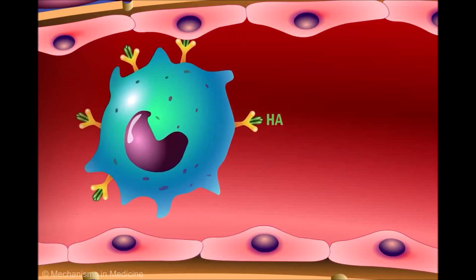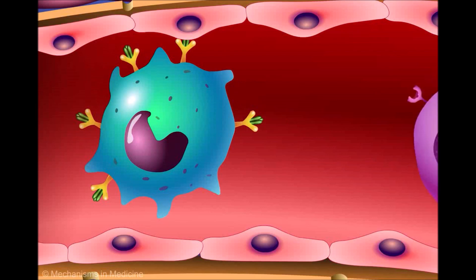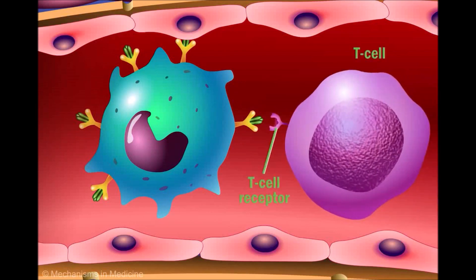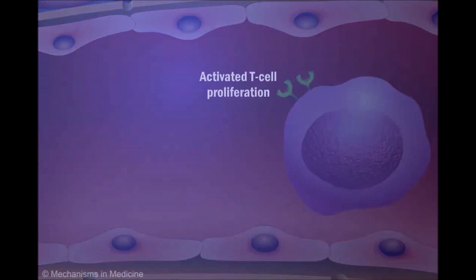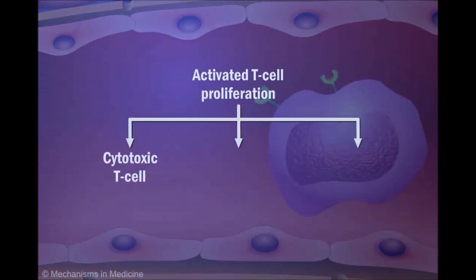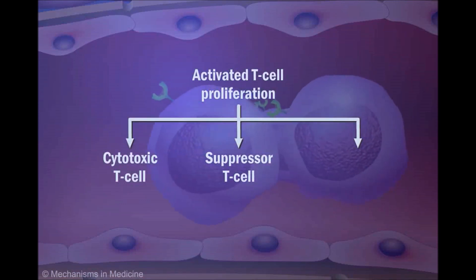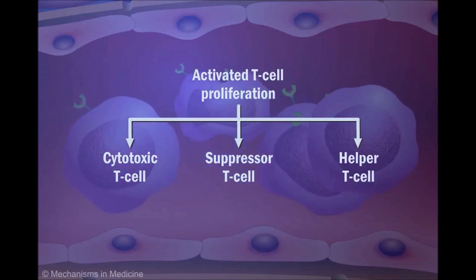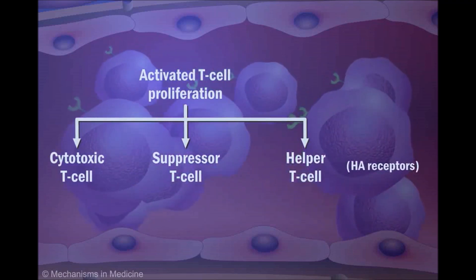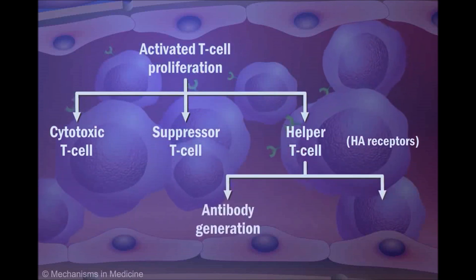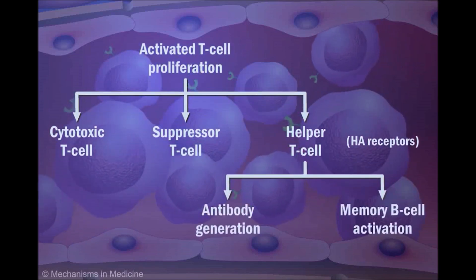Antigens are displayed on the cell surface in combination with a specific receptor known as the Major Histocompatibility Complex, or MHC. T cells are able to recognize and bind foreign antigens associated with the MHC. Upon binding to the MHC receptor, T cells become activated and proliferate into either cytotoxic T cells, regulatory suppressor T cells, or helper T cells. Activated helper T cells express hemagglutinin receptors specific to the vaccine strain on their surface and play a major role in antibody generation and memory B cell activation.